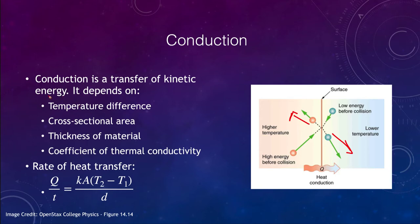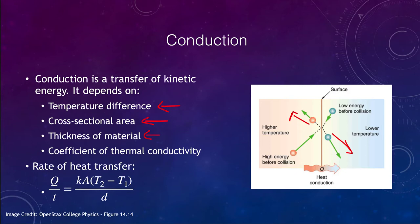The conduction transfer of kinetic energy depends on several things. It depends on the difference in temperatures — a higher temperature difference allows faster energy transfer. It depends on the cross-sectional area over which the objects are connected — a smaller area means a longer time for heat to transfer, while a bigger area allows more effective transfer. It also depends on the thickness of the material — the distance the heat must travel. A shorter distance means faster heat transfer.